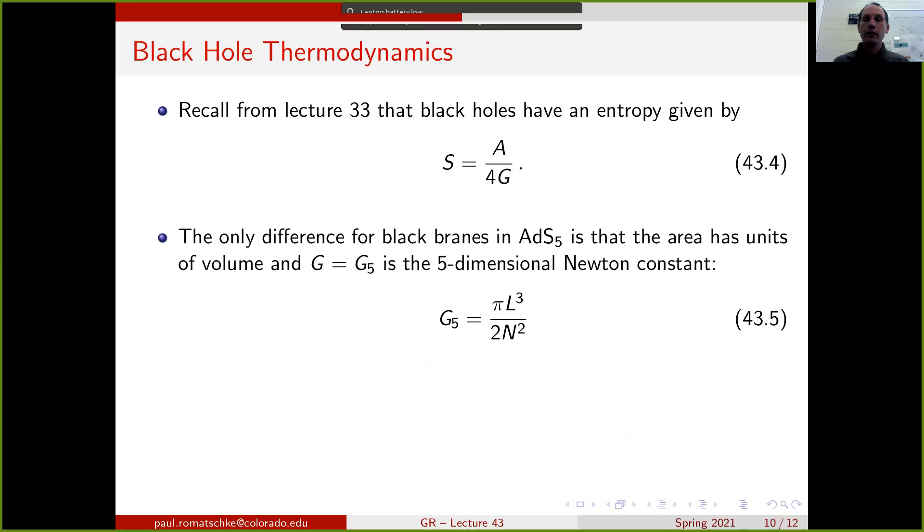For the AdS5 black brane, the entropy is similar, except that because we are one dimension higher in the gravity description, the area here is really a volume, because it's one dimension higher, and G is not the usual Newton's constant, but it's the five-dimensional Newton's constant.